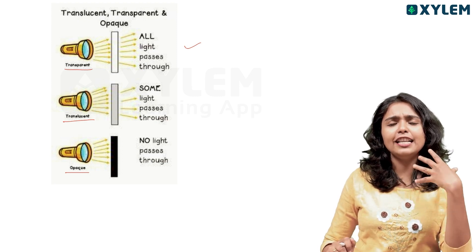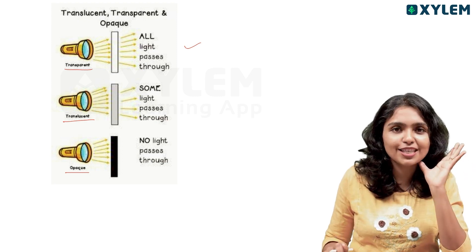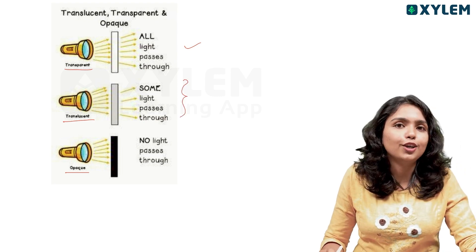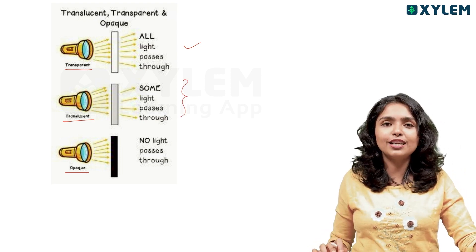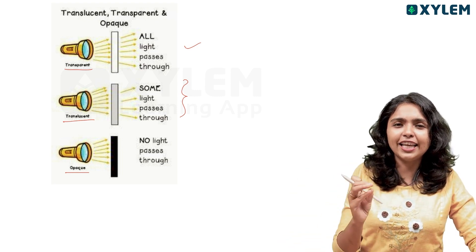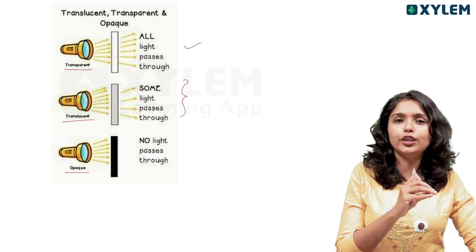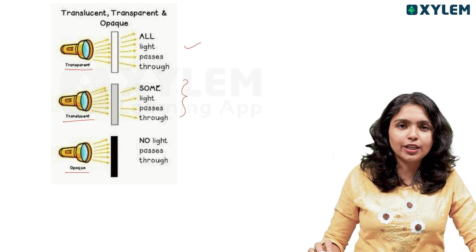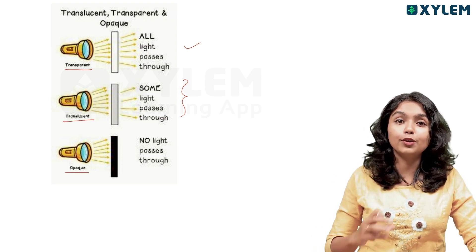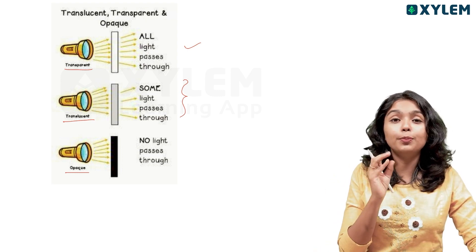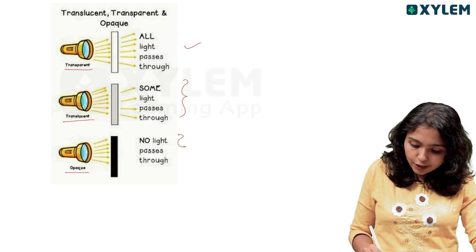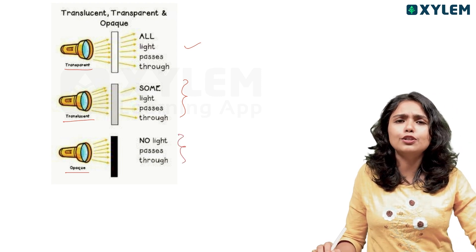An object that allows light to pass through but you cannot see a clear image through it is known as a translucent object. It partially blocks light and you cannot see clearly through it. An opaque object is one through which no light passes at all.